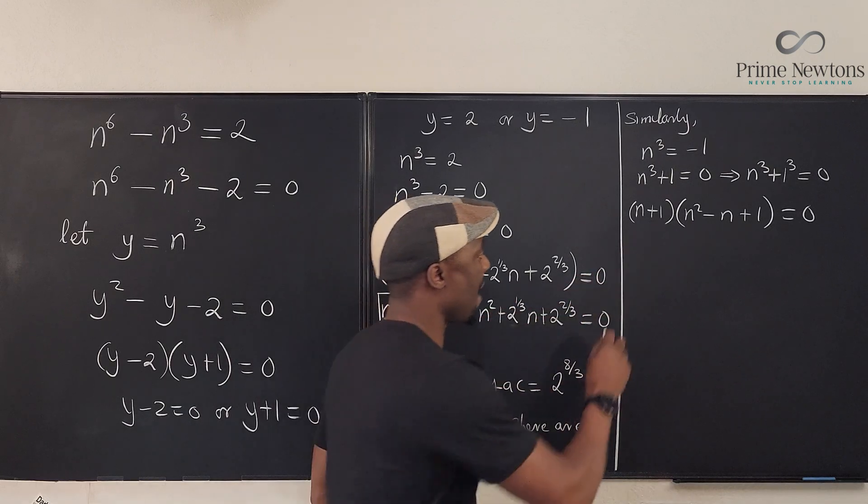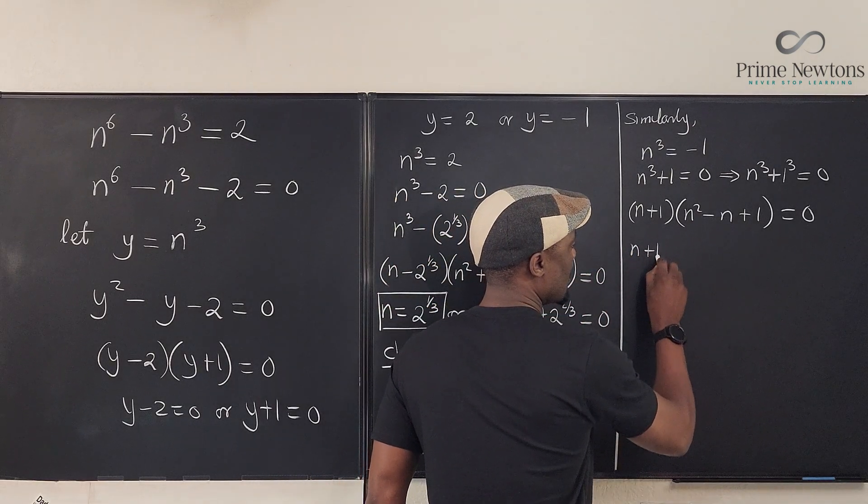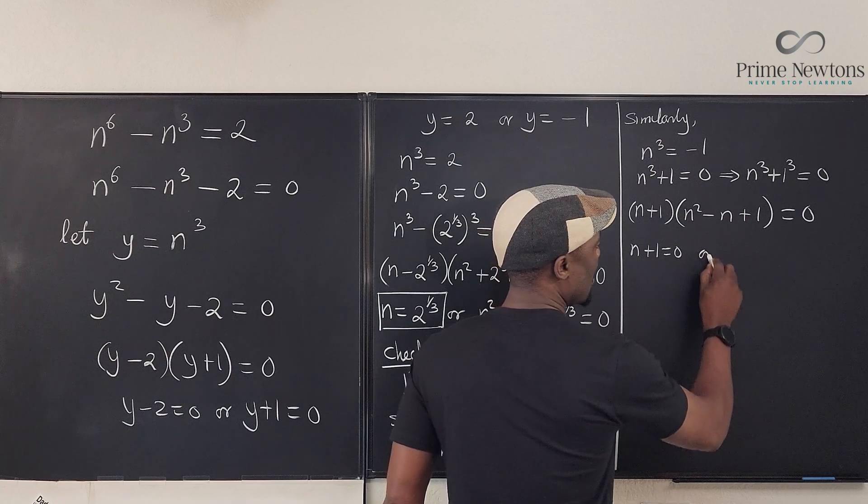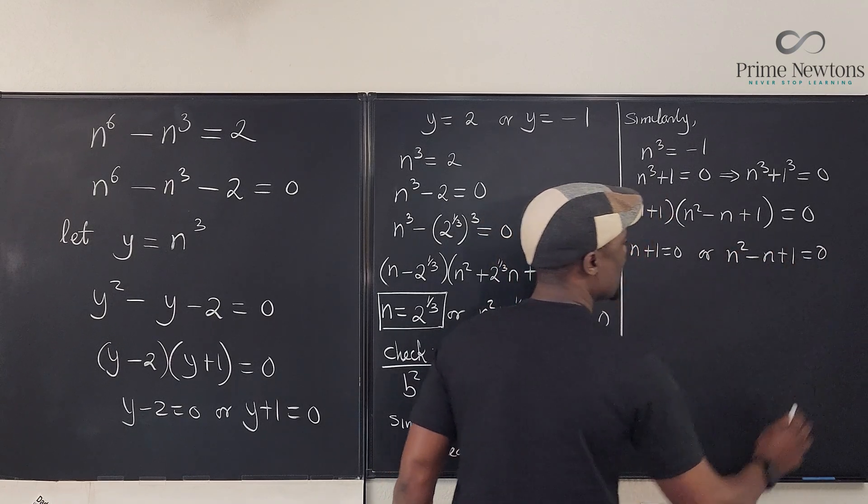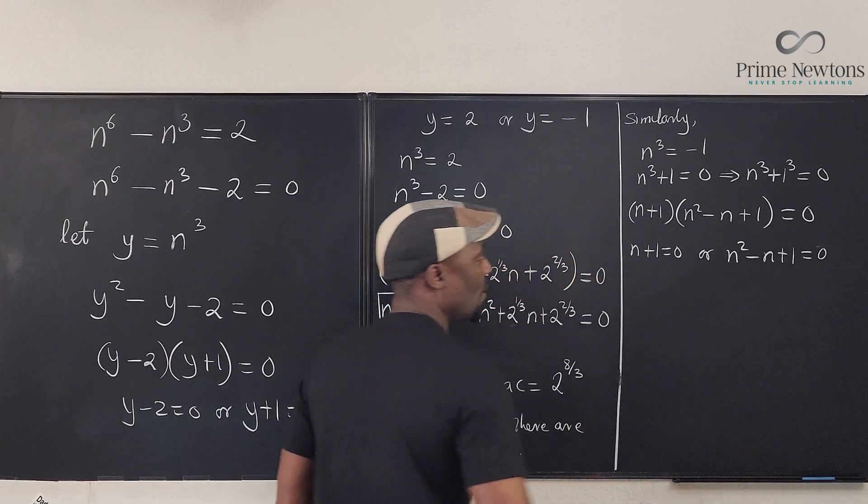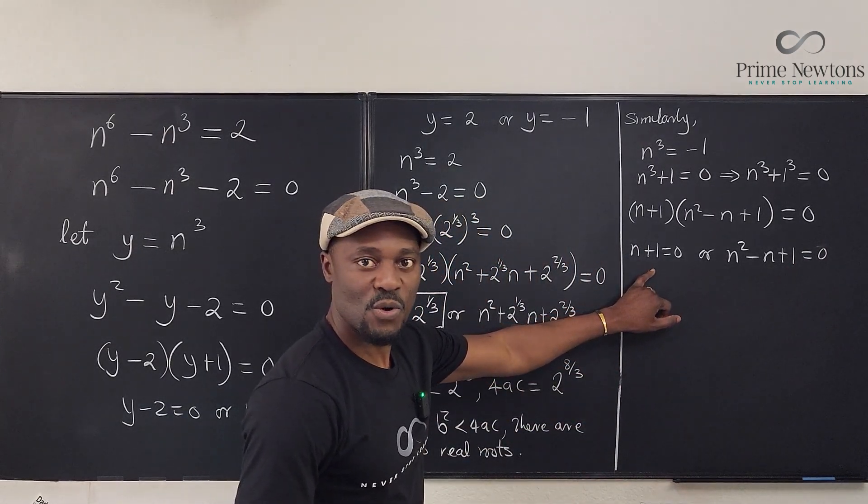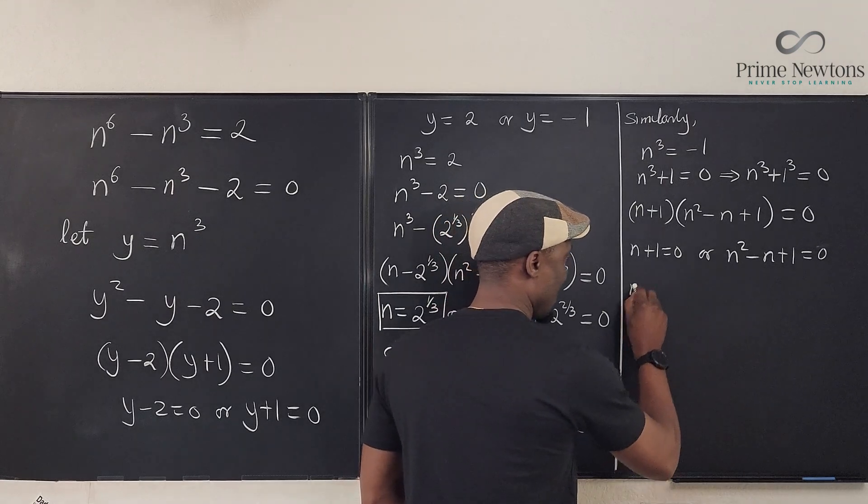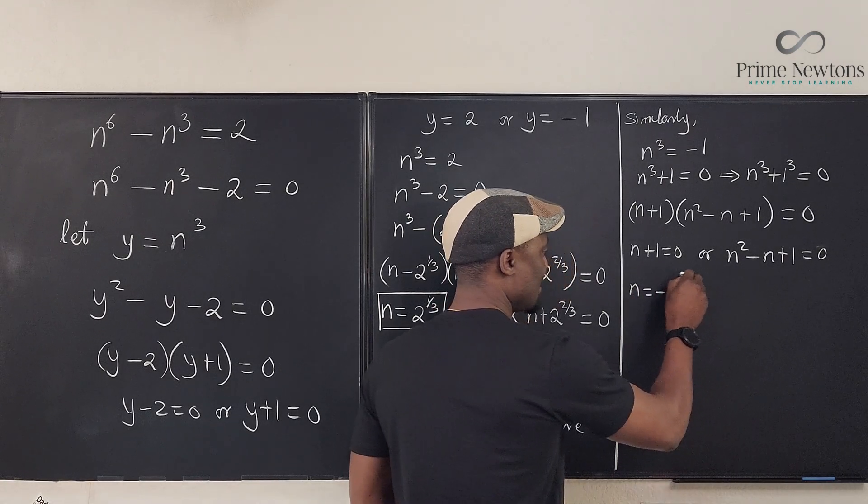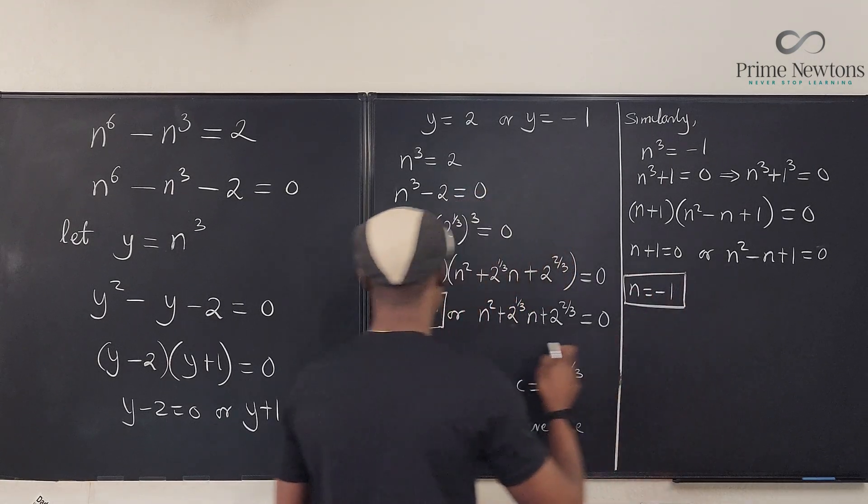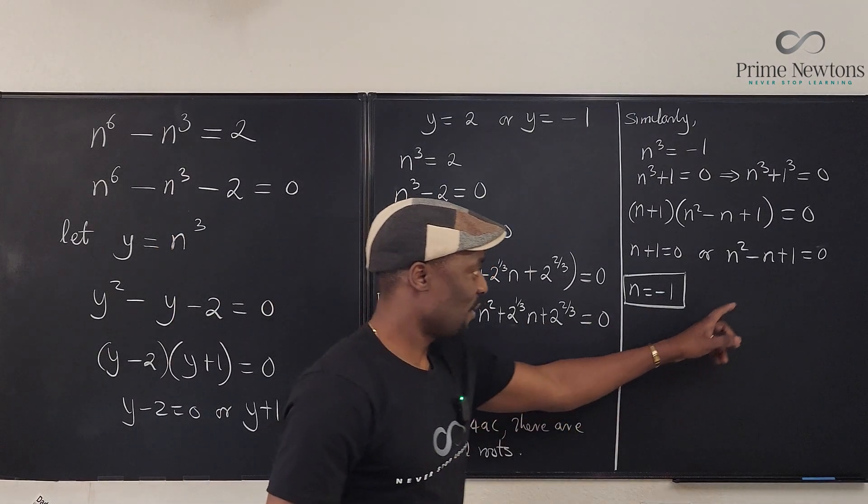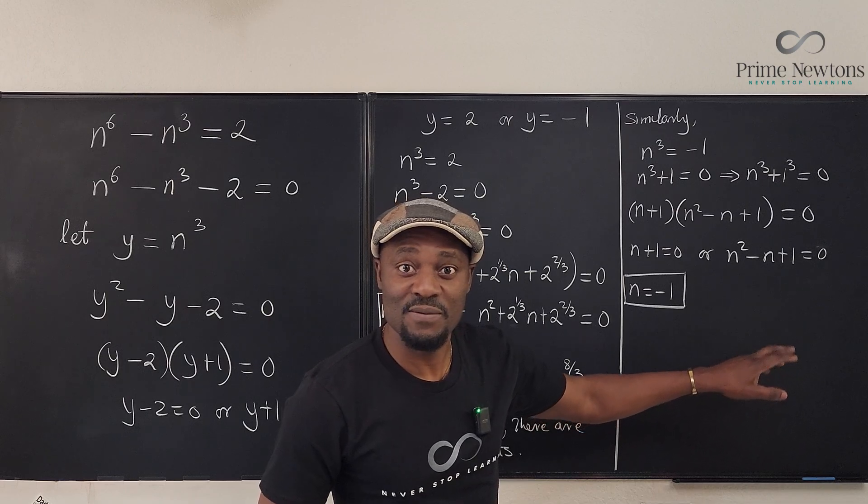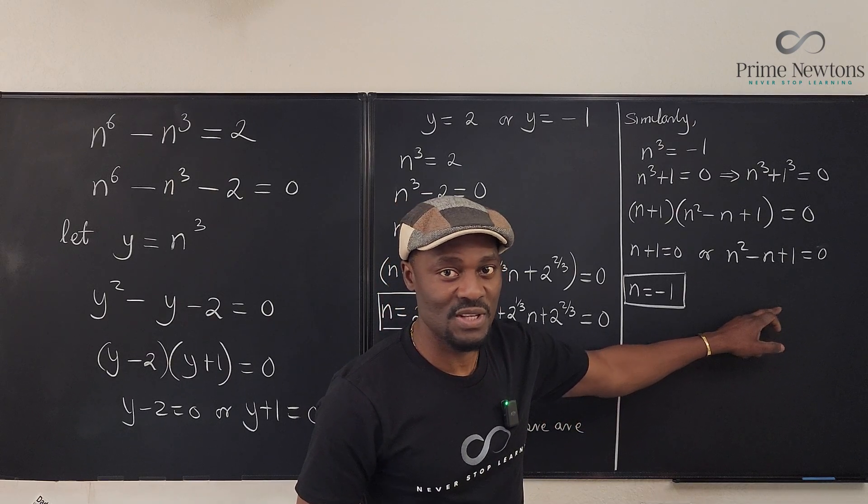So, here, we're going to have n + 1 = 0 or n^2 - n + 1 = 0. So, what do we have? Well, clearly, n = -1 is a solution. n = -1. And this is real. We got another real one. So, we got one real one. We got another real one. Let's go here. Let's check to see if we're going to get a real solution to this.